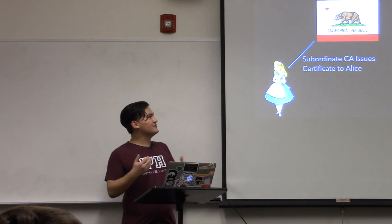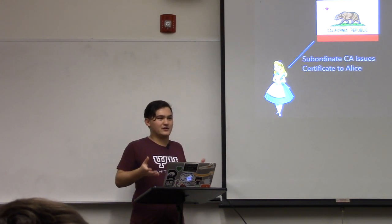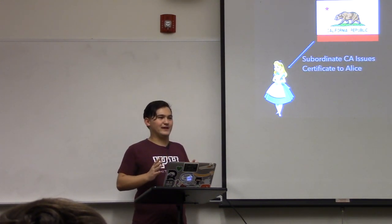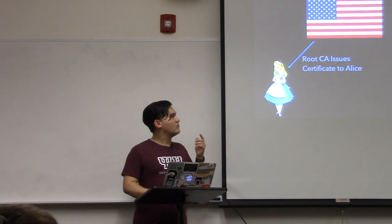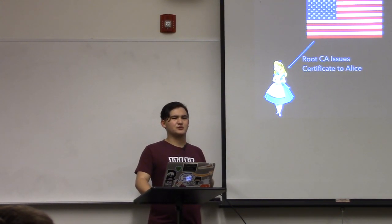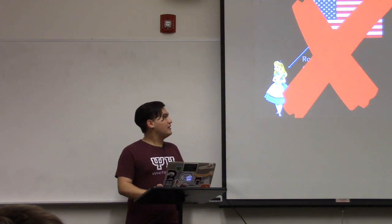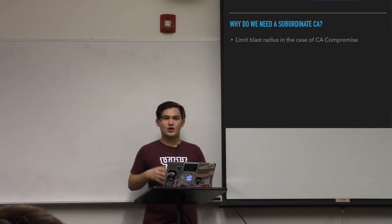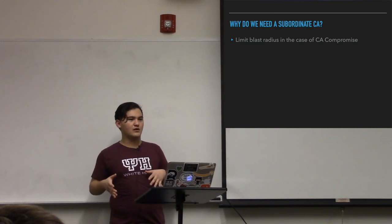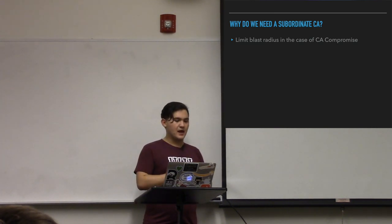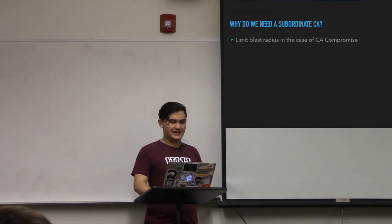After the subordinate CA has validated that yes, Alice does own this domain, it is okay to issue this cert, they will issue the cert to Alice. So that brings up a question: why doesn't the root CA just issue a cert to Alice? Why do we need the subordinate CA in between? Well mainly because with subordinate CAs you have a smaller blast radius in the event that something catastrophic goes wrong — for instance if the root CA becomes compromised — and regulations also require it, partially because of this limited blast radius.